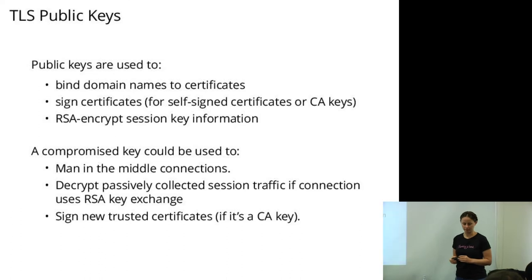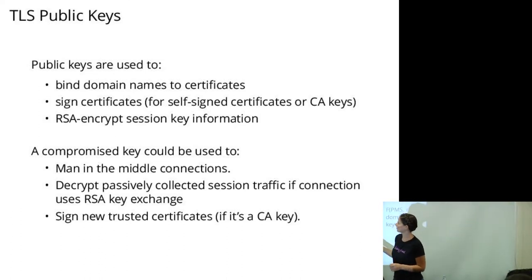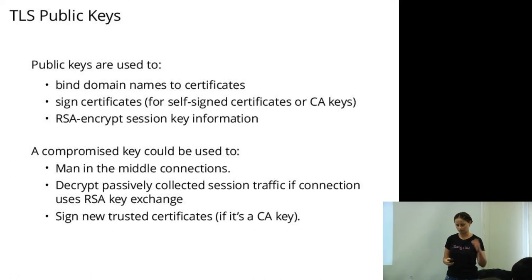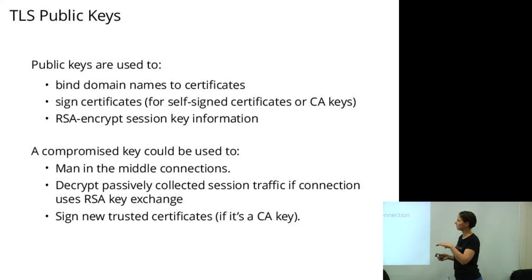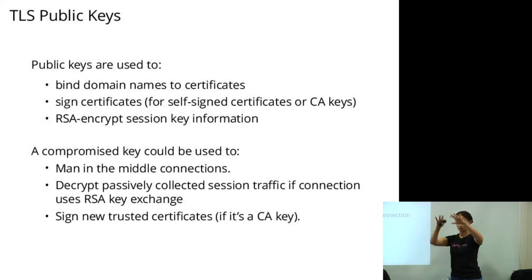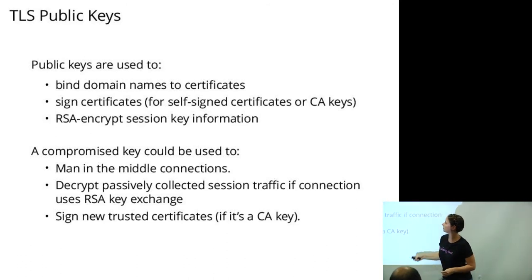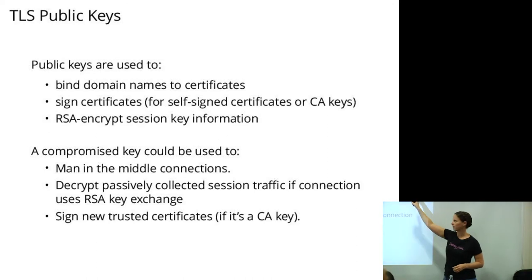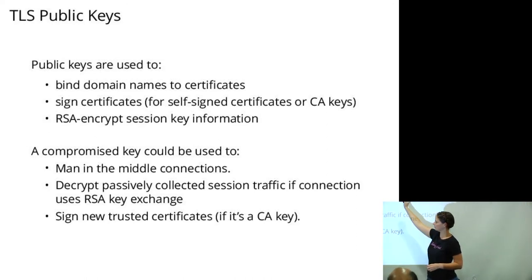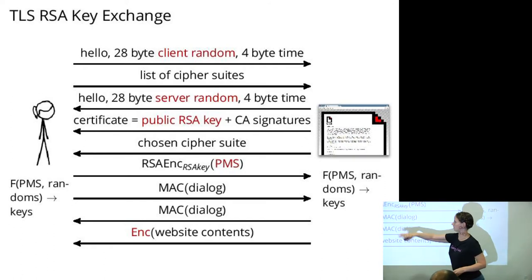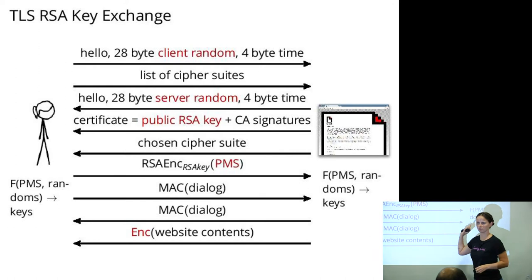The security guarantees given by the public keys in the RSA certificate bind the domain names to the certificate — a certificate authority's public key is used to sign the certificate saying this public key belongs to this website. The particular public keys within the certificate are used to encrypt the session key information. If you break the RSA public key transmitted in the certificate, then you can decrypt the pre-master secret and generate the encryption keys just like the two communicating parties did, and decrypt everything that follows.